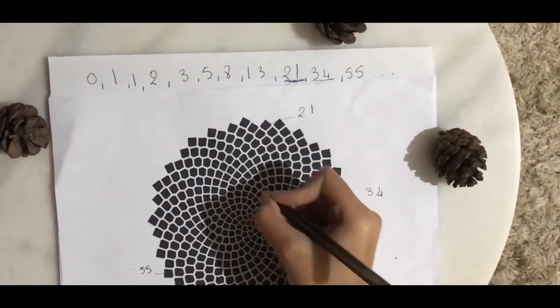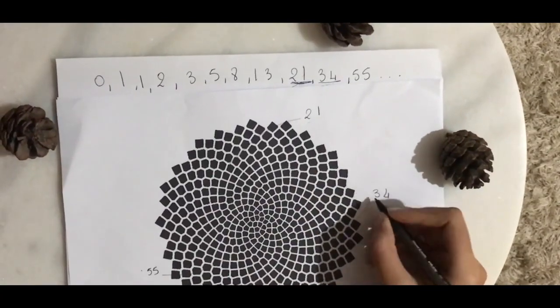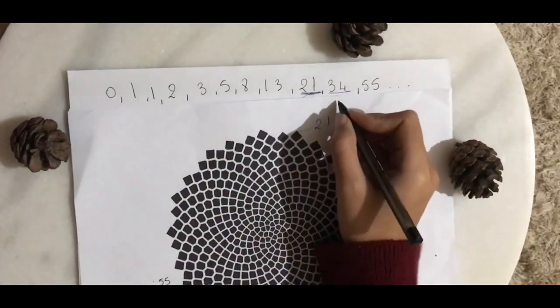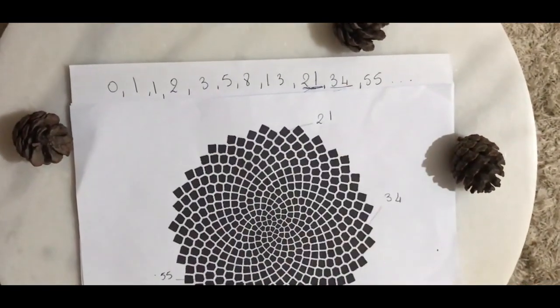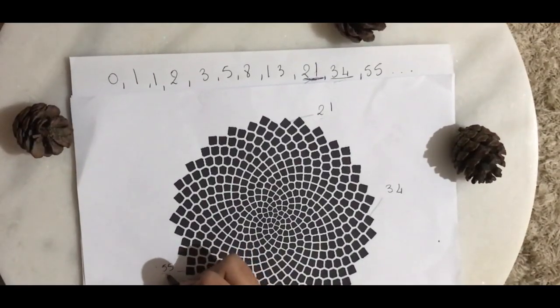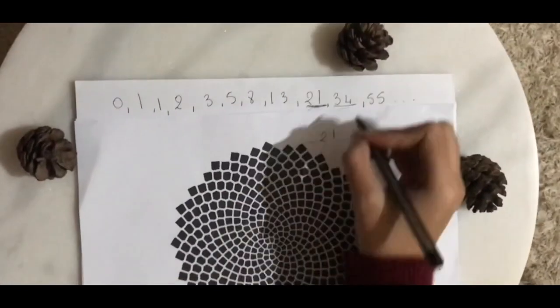Or we could count them going in this direction, in which case we will get 34 total spirals, and 34 is also one of our numbers. Or we could count them going in this direction, in which case we will get 55, and 55 is also one of our numbers.